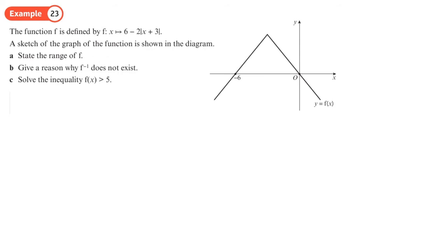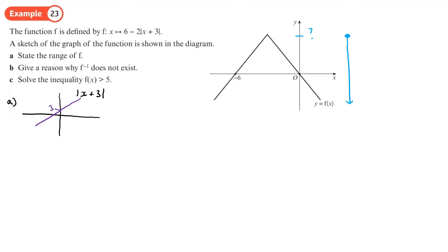Now we're given the graph and want to state the range of f. This function goes down forever since there's no limit on x, so I need to find the peak. To do that, we look at where this graph came from: starting with the graph of x + 3, crossing at 3, then taking the modulus of (x + 3), which flips the part below the axis up. Then the negative 2 stretches and reflects it in the x-axis.